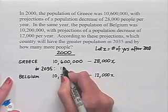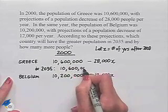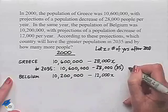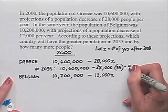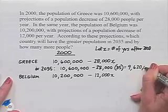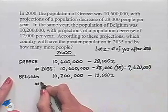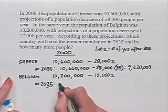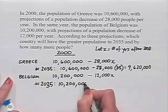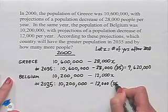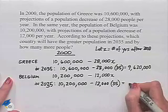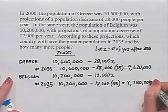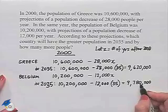In the year 2035, the population of Greece would be 10,600,000 minus 28,000 times 35, which equals 9,620,000. Likewise, the population of Belgium in the year 2035 is calculated as 10,200,000 minus 12,000 times 35, and that value ends up being 9,780,000.